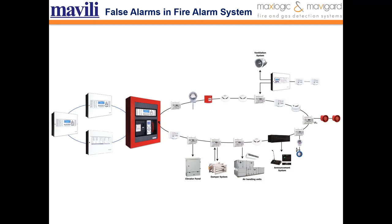Fire alarm systems detect a fire in a building through input devices. The most commonly used input devices are detectors and manual call points. If these input devices go to the alarm state even though there is no fire in the building, the fire alarm system generates a false alarm.